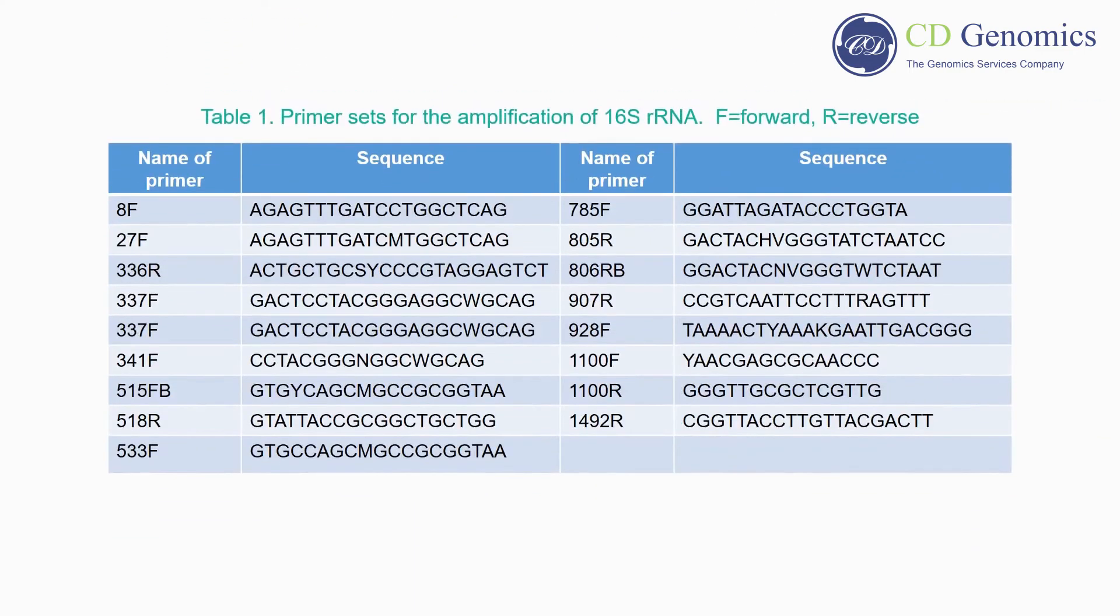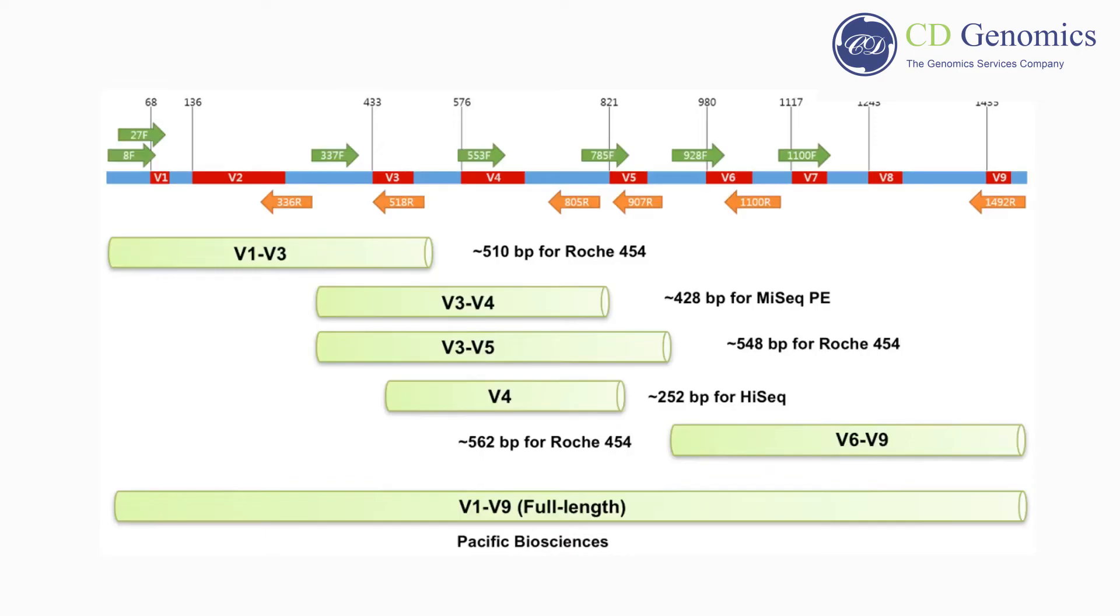There are several primer pairs commercially available. The full-length 16s ribosomal RNA gene is usually amplified by the pair of primers 27F and 1492R, followed by Sanger DNA sequencing or PacBio SMRT sequencing. Because different lengths of DNA are sequenced by various high-throughput sequencing platforms, a suitable pair of PCR primers should be used. The suitable primer sets for various sequencing systems are shown in the figure.